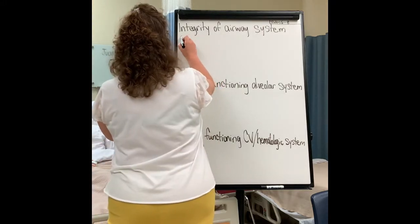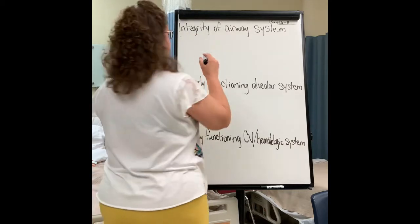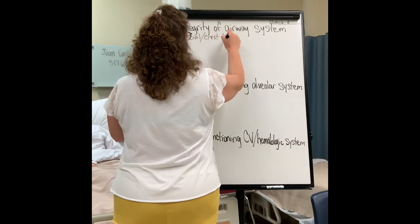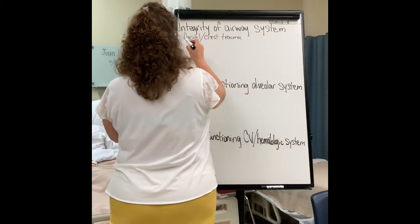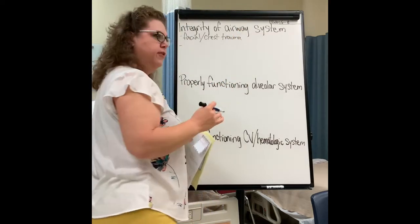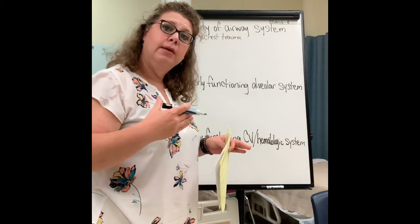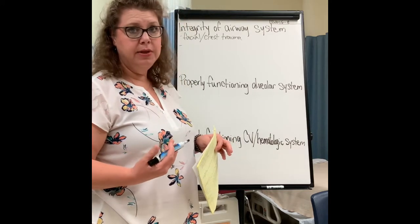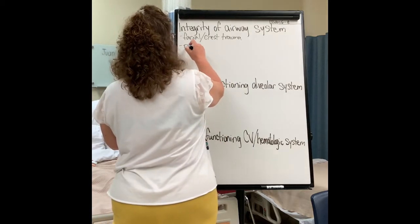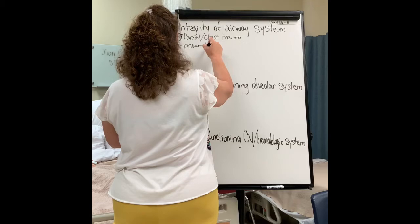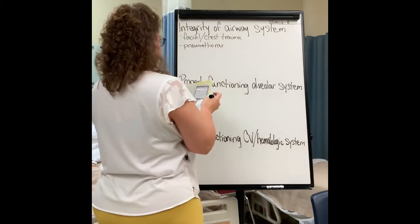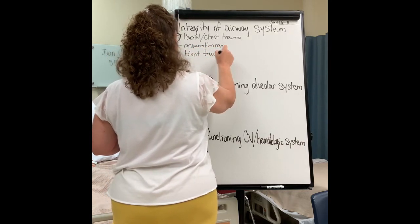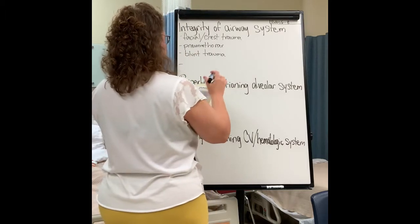So let's write facial and chest trauma. If you have chest trauma like a rib fracture, and that rib penetrates into lung tissue or into the pleural cavity, then you're going to end up with a pneumothorax. So we'll write pneumothorax, blunt trauma, and penetrating trauma.